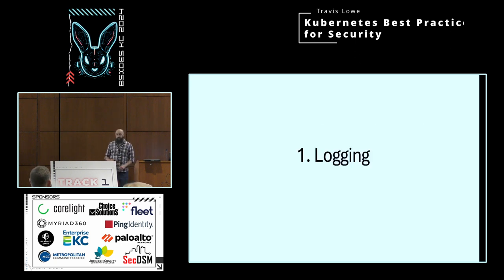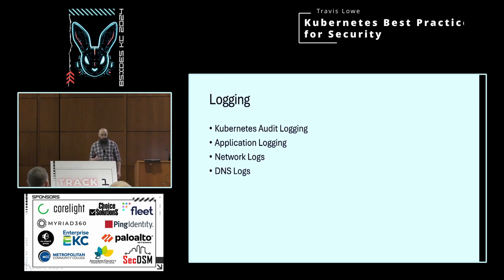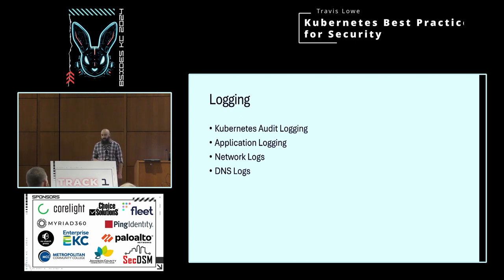From a security perspective, we care about logging — probably one of the more important things that we care about in all of security, in Kubernetes as well. There are lots and lots of different logs you can choose from, and you're probably going to need them all to figure things out. The most critical here are Kubernetes API audit logs. They tell you exactly who, what, and where happened in the cluster.